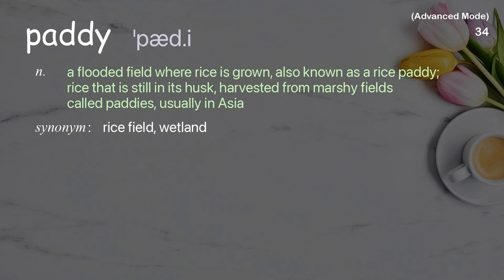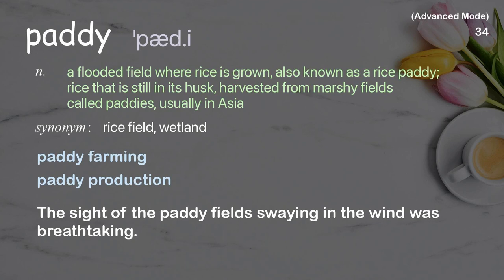Paddy: a flooded field where rice is grown, also known as a rice paddy; rice that is still in its husk, harvested from marshy fields called paddies, usually in Asia. Examples: paddy farming, paddy production. The sight of the paddy fields swaying in the wind was breathtaking.